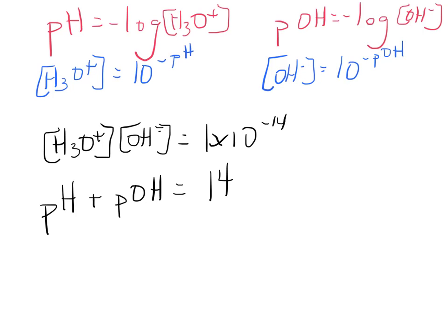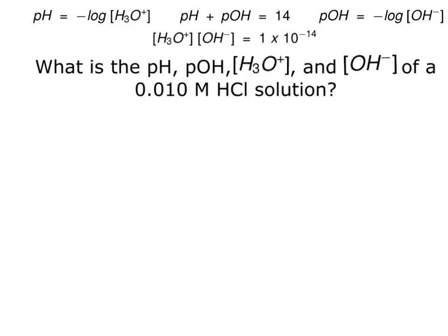Okay, so the next thing we need to do is just try some calculations. Alright, what is the pH, pOH, H3O+ and OH- of a 0.01 M HCl solution? First thing you need is a balanced equation.